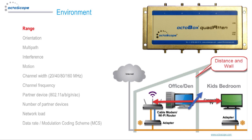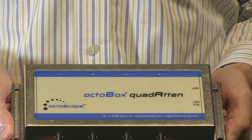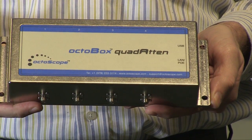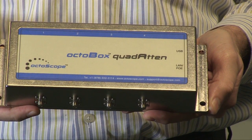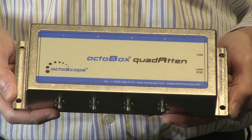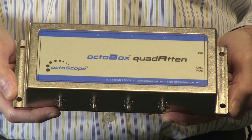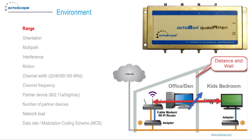Wireless metrics are a function of many variables. First, let's look at the RF environment. Wireless performance and behavior vary as a function of distance and obstacles such as walls, which limit the operating range of wireless networks. The Octobox testbed utilizes our Quad-A-10 programmable RF attenuator to emulate distance and walls. The Quad-A-10 incorporates four programmable attenuators to form a 4x4 MIMO link and enables you to test throughput, jitter, and packet error rate versus range as well as other aspects of performance.